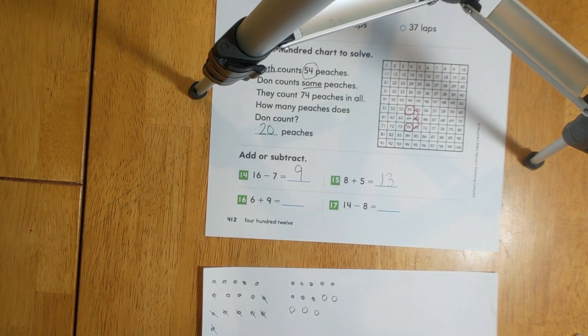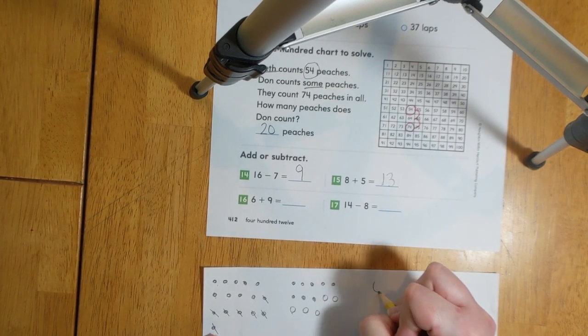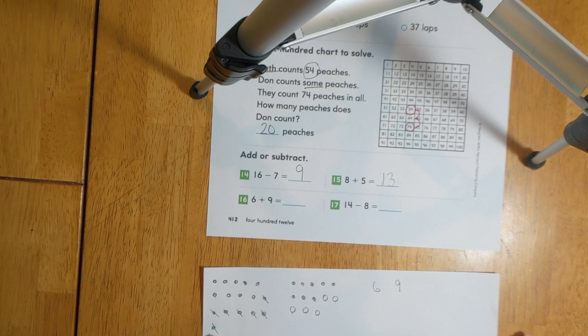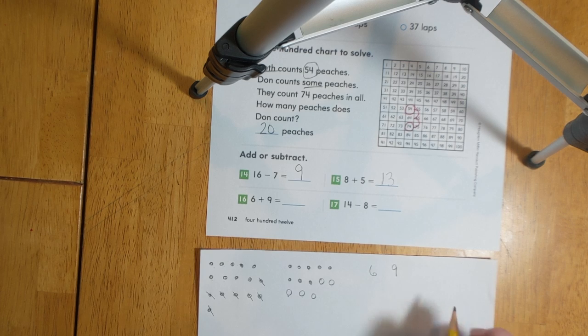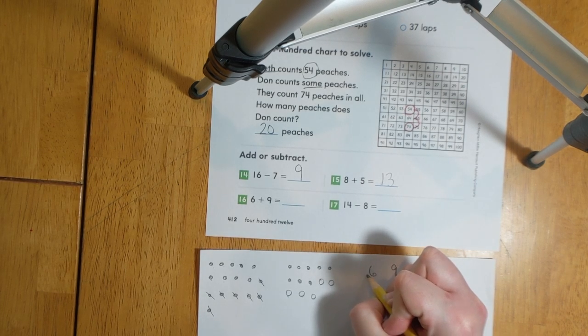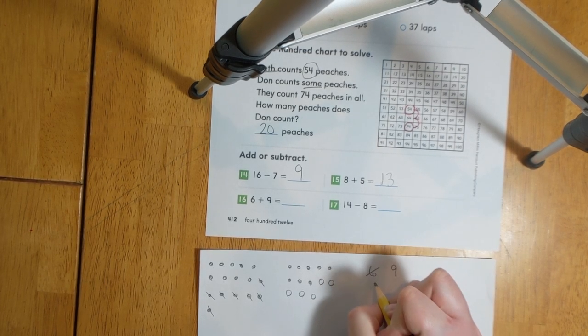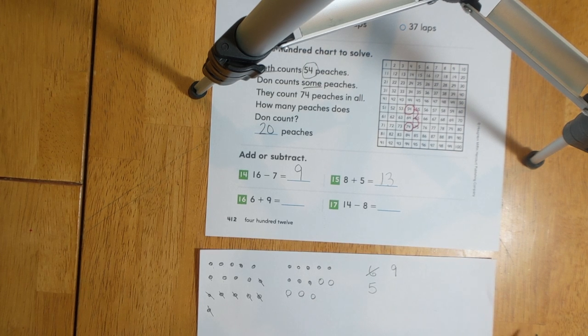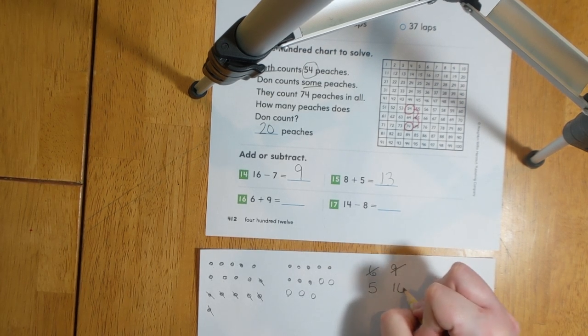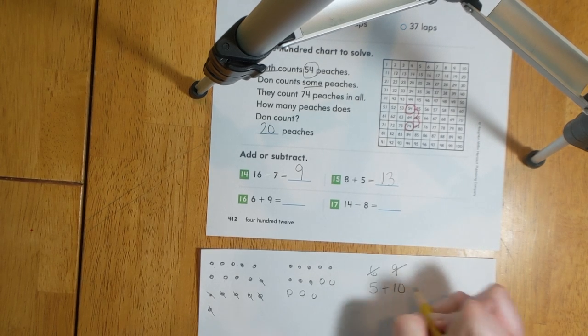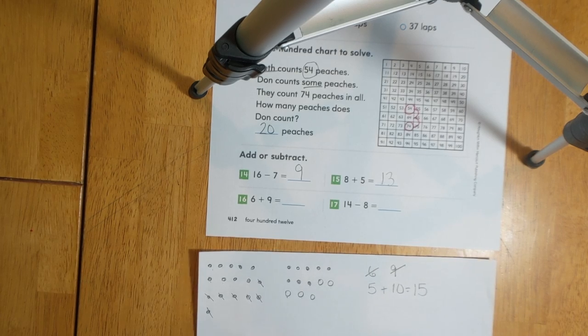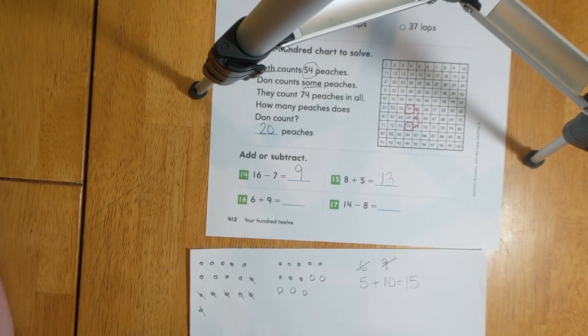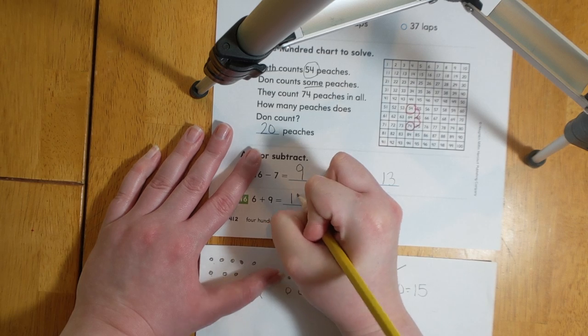For number 16, we can practice making a 10. I have the numbers 6 and 9. I know that 9 is 1 less than 10. So let's borrow 1 from the 6. That leaves us with 5. This will become a 10. We know that 5 plus 10 equals 15. So 6 plus 9 also equals 15.